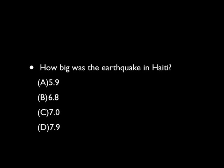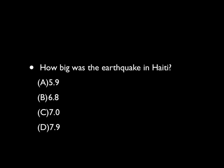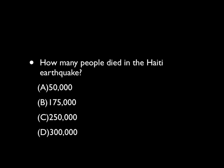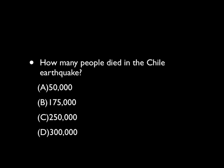The earthquake in Haiti was a magnitude of about 5.9 — depending on reports, 5.9 to 6.8 — and approximately 250,000 people died. The earthquake in Chile was 8.8, and actually less than 1,000 people perished in that earthquake.